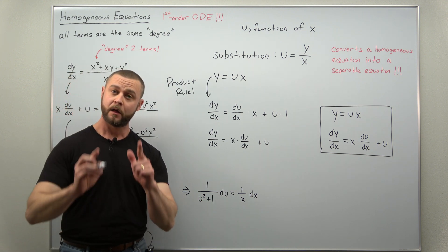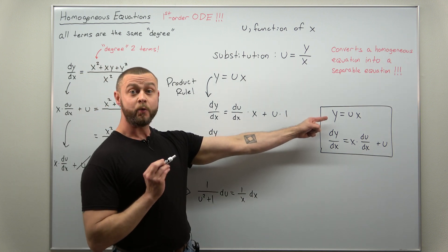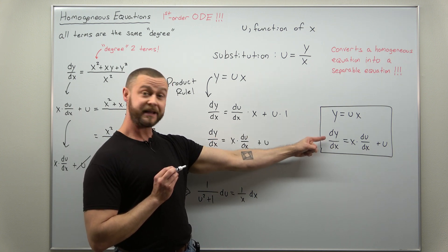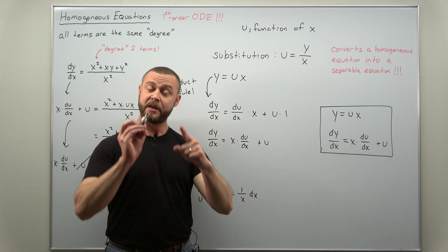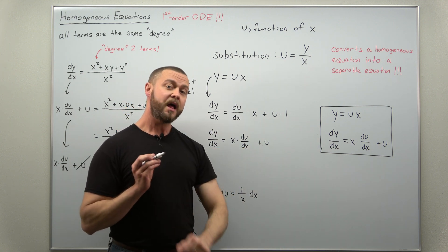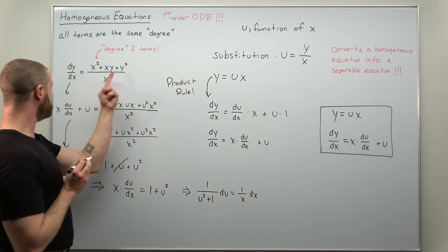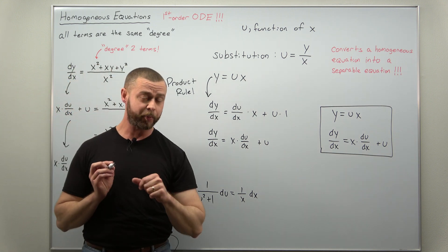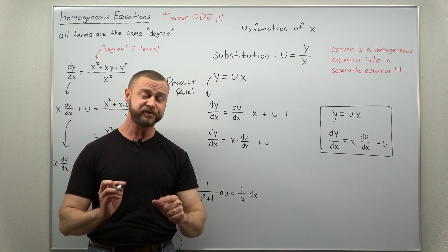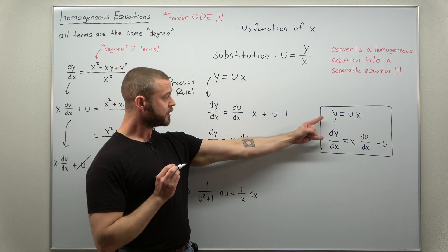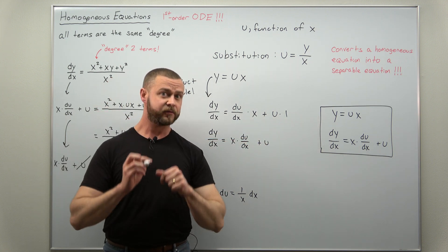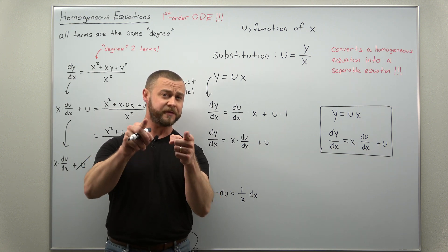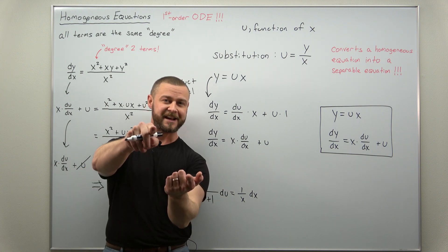The whole point of this second part was to show first how we can use the rearranged substitution y equals u times x to get a nice conversion for dy over dx in terms of du over dx, and then how we take both of these and actually use them in a homogeneous differential equation. Hope you enjoyed this shortened video — you can refer back to this as you go through examples and immediately plug these substitutions in. Problems for solving homogeneous equations are also linked below in the description. Hope you enjoyed the video — if you did, support the channel: like and subscribe.